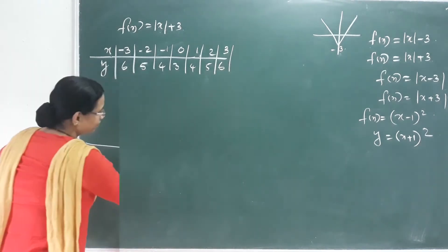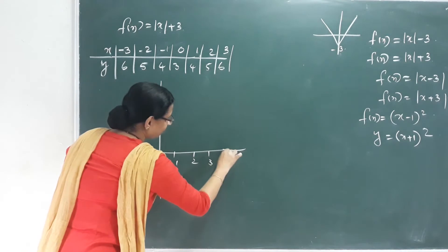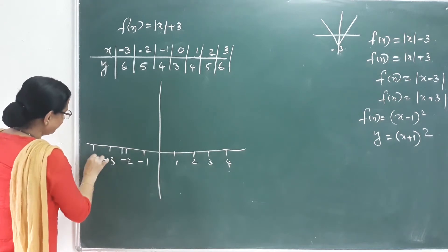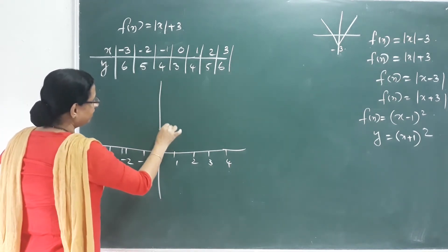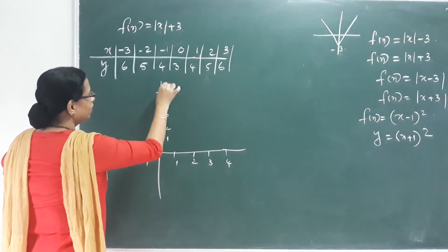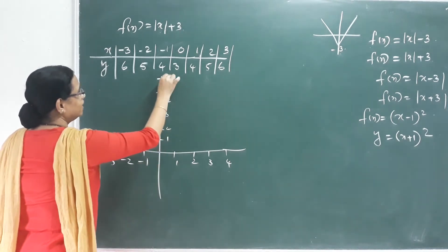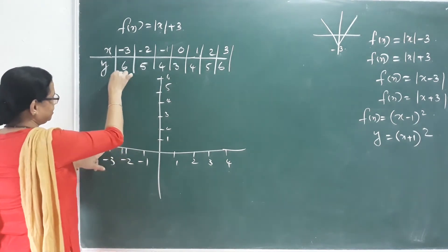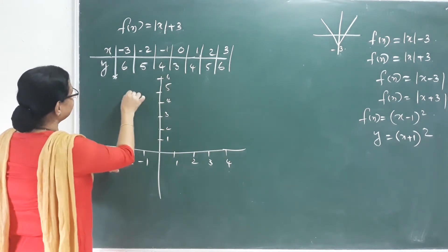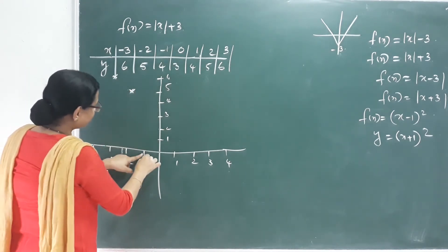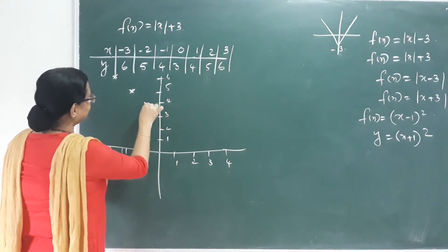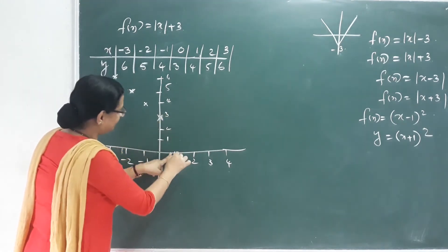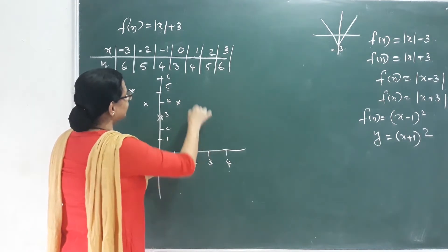Let's see here — we mark it. This is 1, 2, 3, 4, negative 1, negative 2, negative 3, negative 4. This is 1, 2, 3, 4, 5, 6. Now we go to negative 3: if we add negative 3, we get 6. Negative 2 gives 5, negative 1 gives 4, 0 gives 3. Where is the vertex? If we add 1, we get 4. If we add 2, we get 5. If we add 3, we get 6.